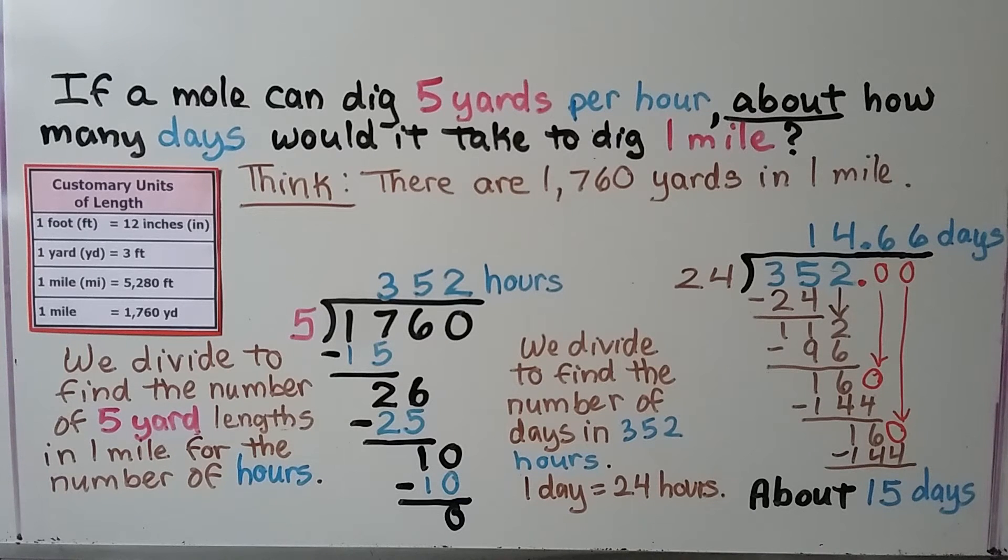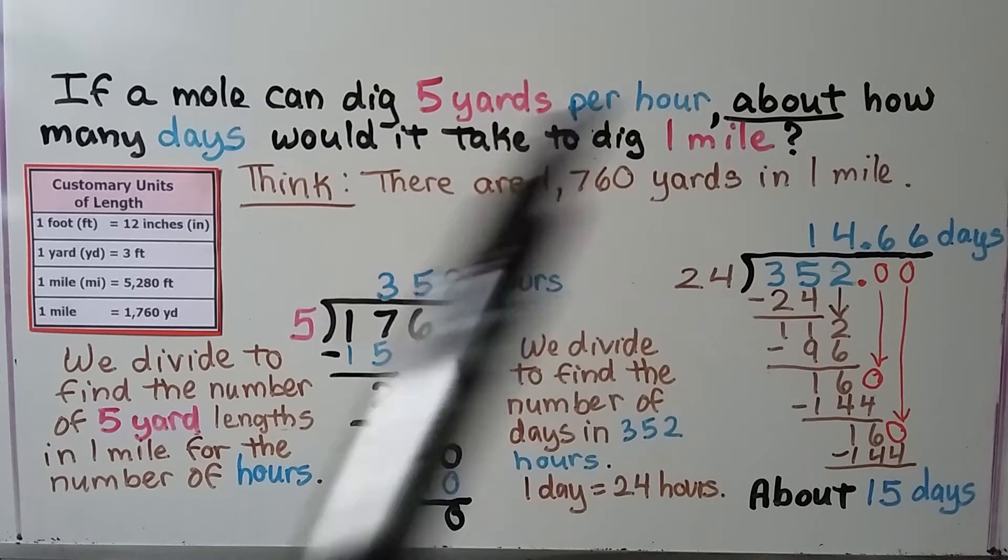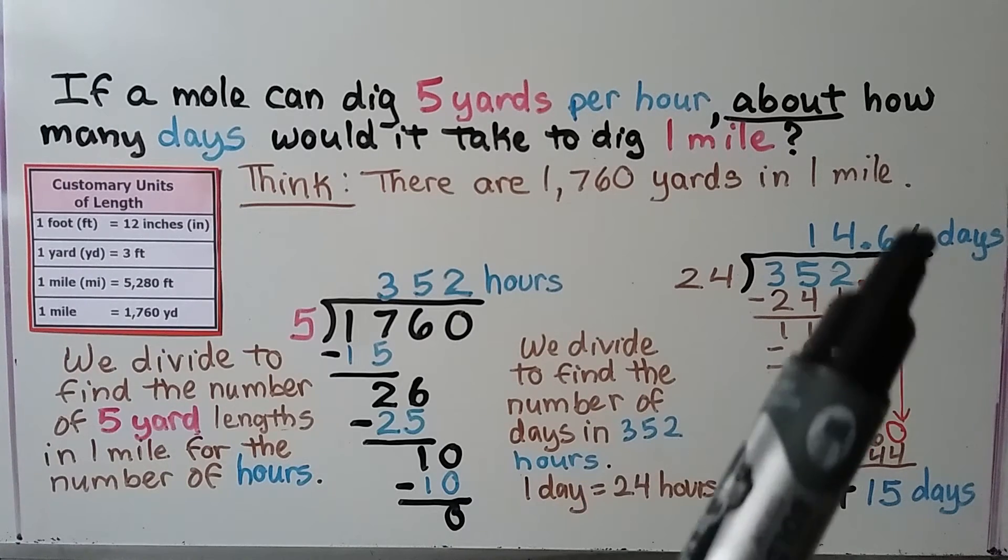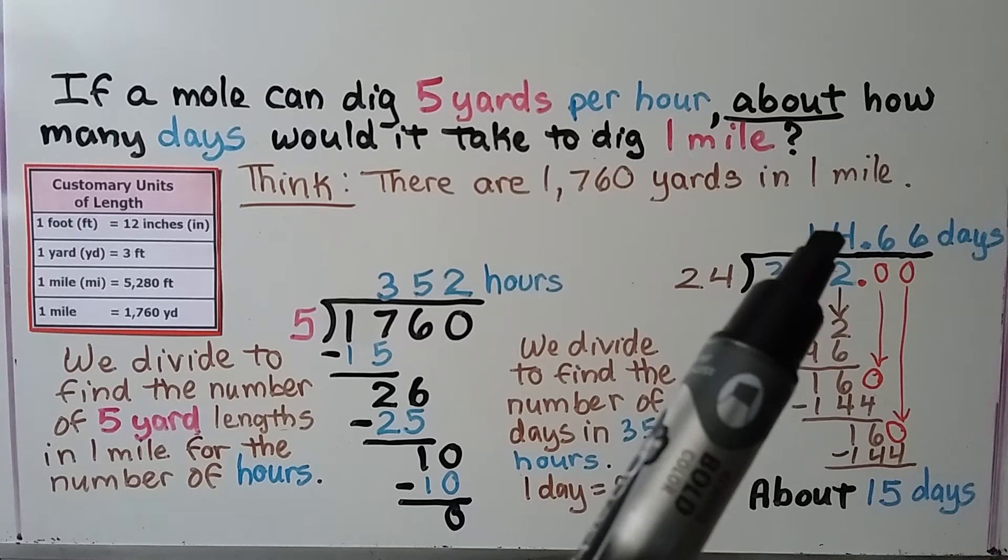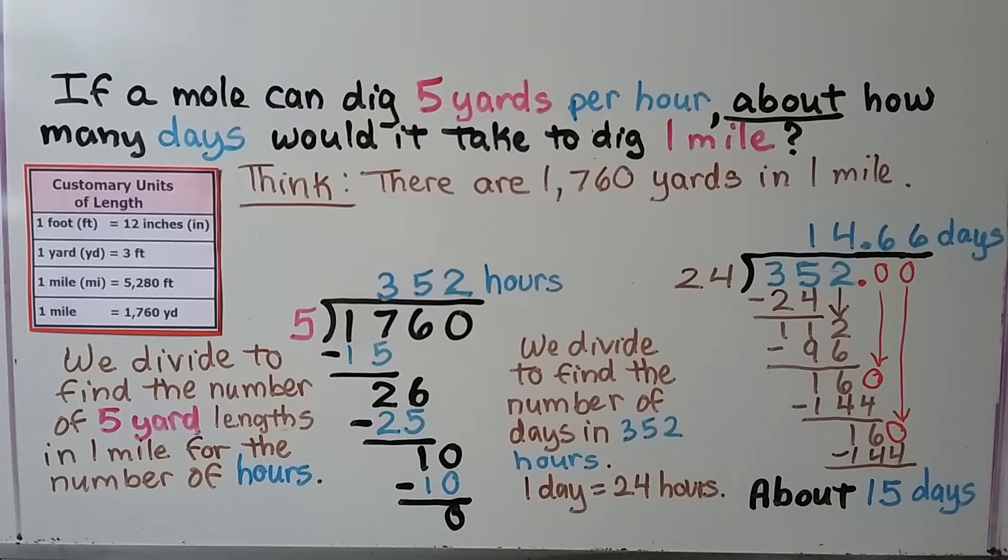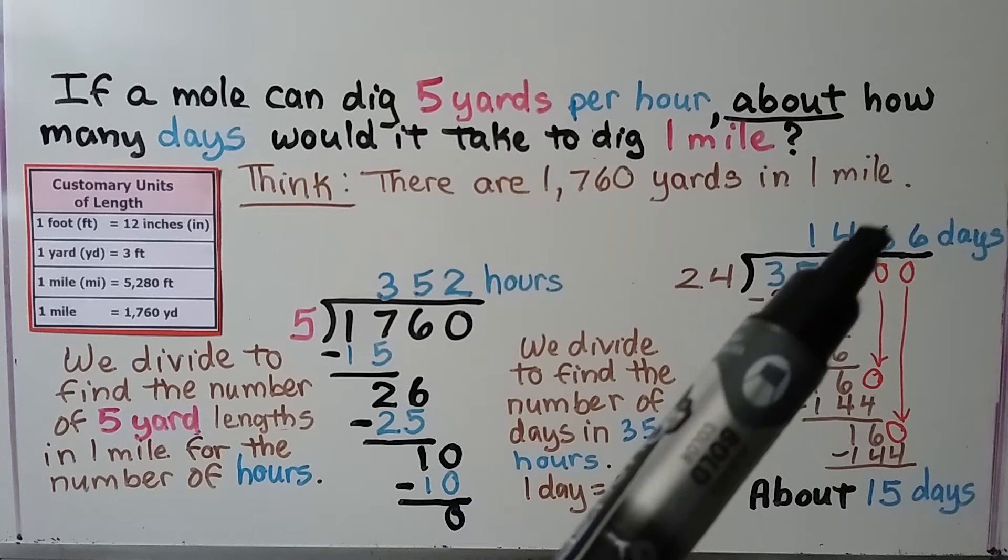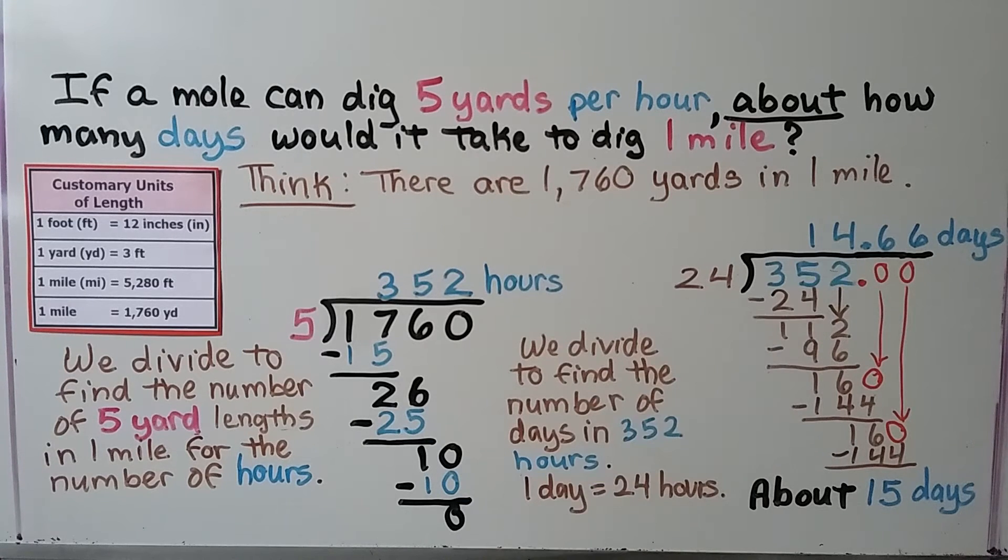That's 14 and 66 hundredths days. And it says about how many days. So really the decimals are not very important except to help us round to the closest ones place. That would be about 15 days. The six tells the four to round up to a five. It would be about 15 days for that mole to dig one mile.